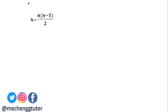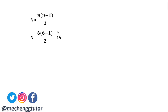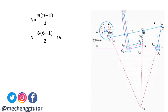First, we determine the number of instantaneous centers in the mechanism. The number of links is six, so substituting n = 6 into the formula, we get the total number of instantaneous centers as 15.